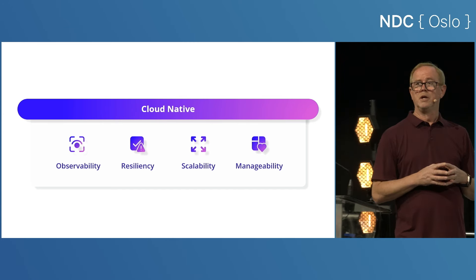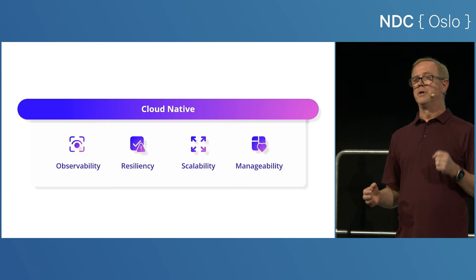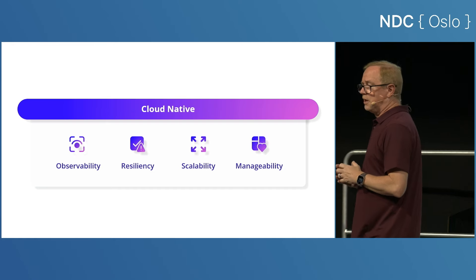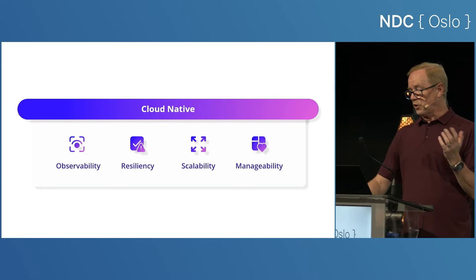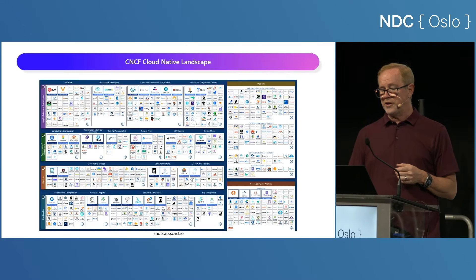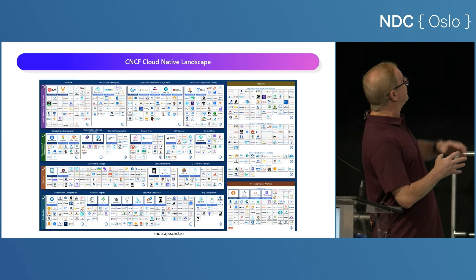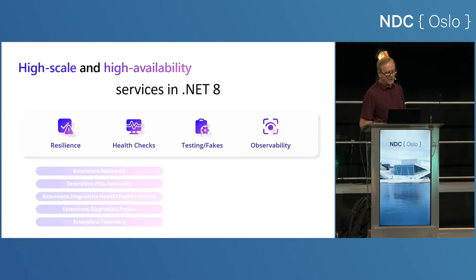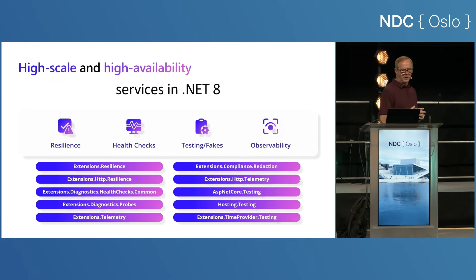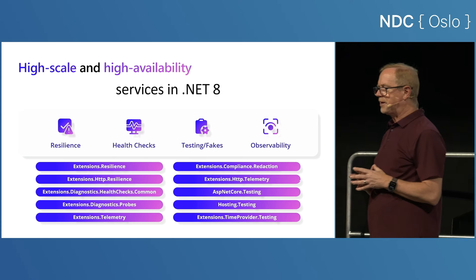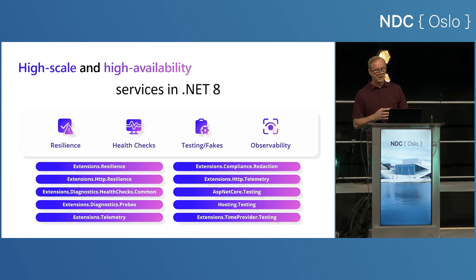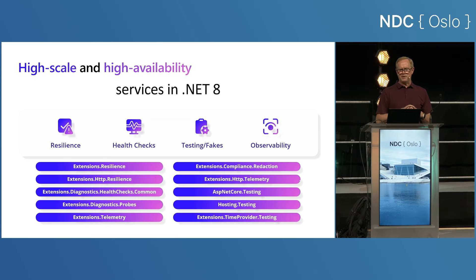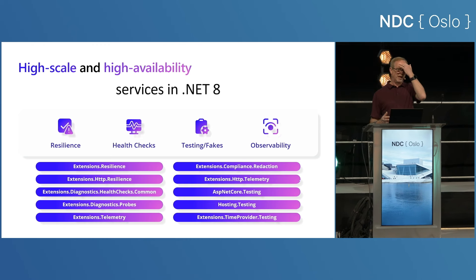Aspire has the ability to run containers locally and create resources in the cloud — all those things very simply via code. This is the CNCF cloud-native landscape. Our goal is not to make you have to worry about any of that stuff — that's way too much. We shipped a lot of this tech before: resiliency in ASP.NET Core 3, health checks in ASP.NET Core 3, observability around .NET 7 or 6. There are all these namespaces you've probably never used before, and our job is to make you not have to worry about any of this stuff at all.